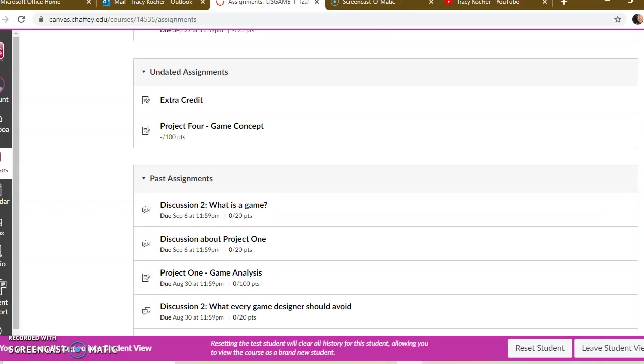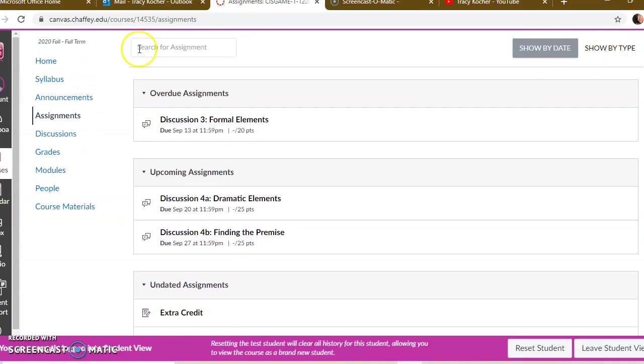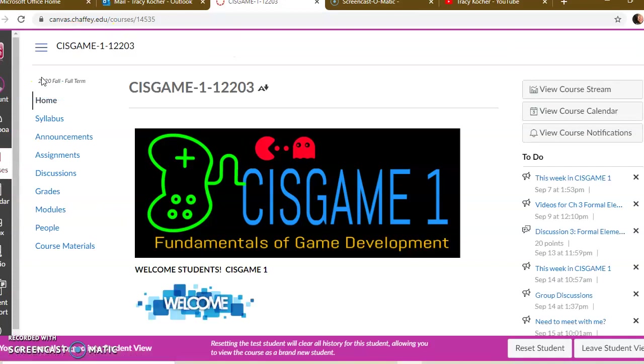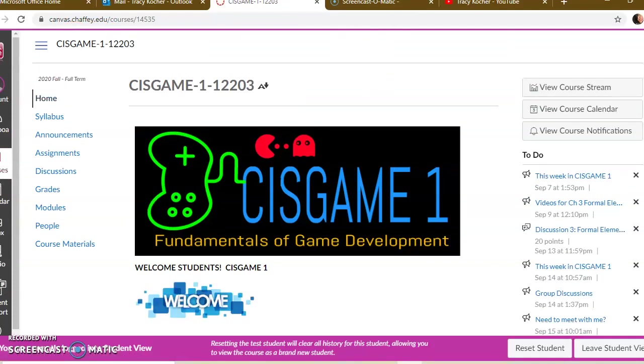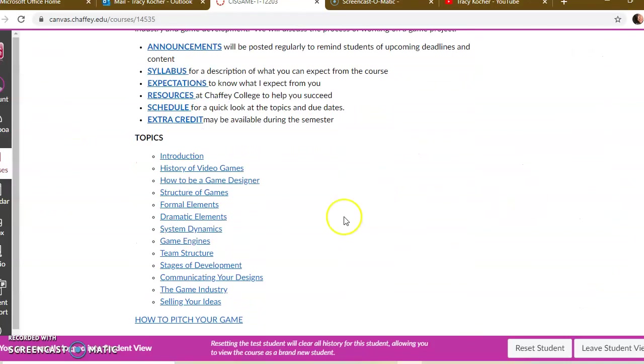And that project is going to be... I don't have it posted. Okay. Well, that project is going to be to create a game idea by describing entirely what the structure of the game will be, the formal elements, the dramatic elements, and how they work together in the system. And then you'll make a quick pitch, a five-minute video describing your game idea and get feedback from the other people in this class.